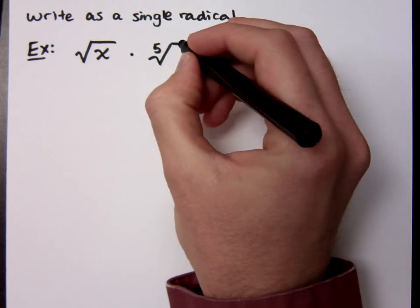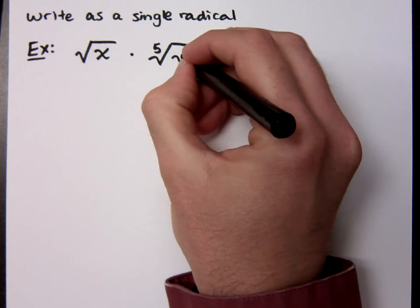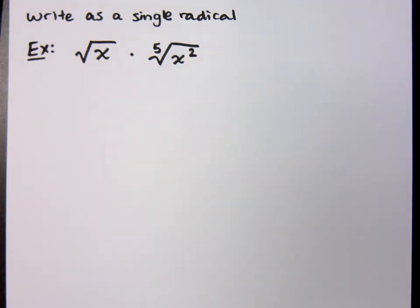So I have the square root of x times the fifth root of x squared. See, right now, these guys can't be multiplied together. Even with the property that I'm about to show you, they still can't be written as one without doing a little bit of work. But what we were just talking about at the end of class last time is how I can rewrite these guys using exponents.